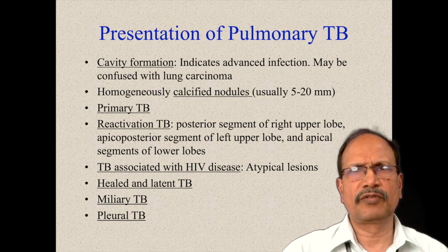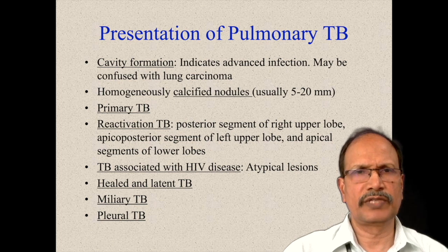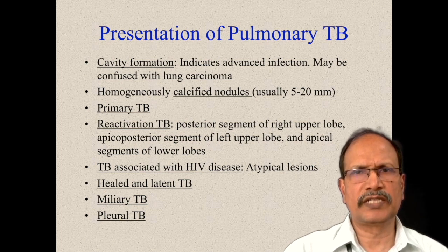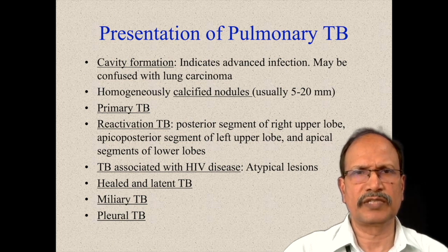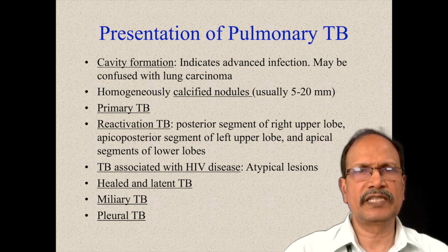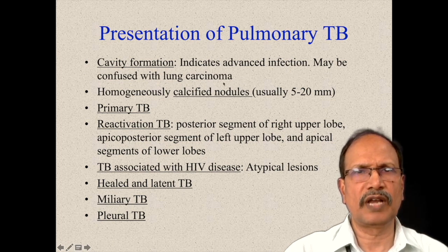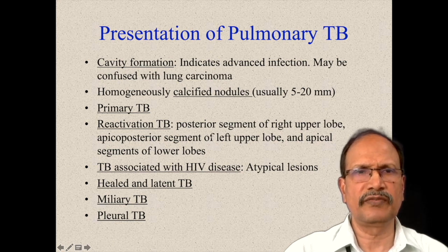Presentations of pulmonary tuberculosis are varied. If it is a primary variety of tuberculosis, we have seen that it is subpleurally located with hilar lymphadenopathy, especially affecting children. And if you see a calcified nodule in a child which is located subpleurally, you should think of the possibility of healed primary pulmonary tuberculosis. Secondary tuberculosis is known to cause cavity formation, and this cavity formation may be mistaken for lung carcinoma, which again may produce cavities because of necrosis.